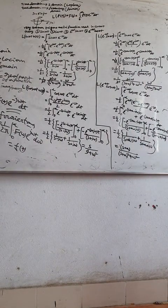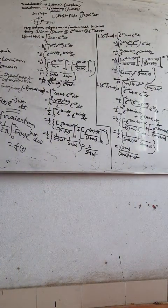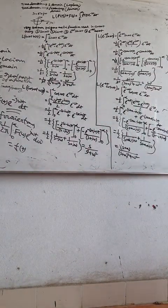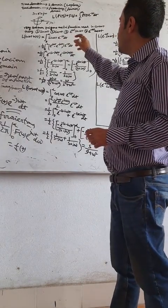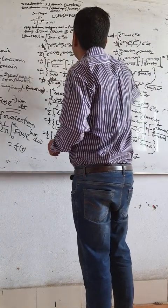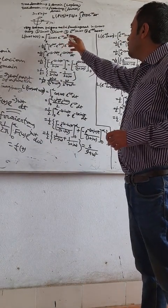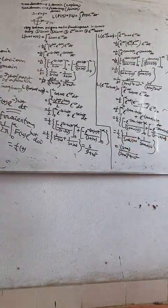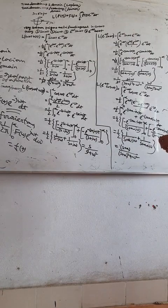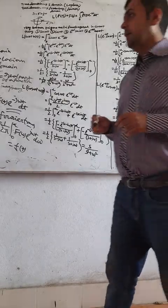Whenever you are doing work in circuit theory, you use certain functions. The very common trigonometric functions used in circuit theory are: sine of omega t, cosine of omega t, e to the power minus at times sine of omega t, and e to the power minus at times cosine of omega t. These four functions are used rapidly in circuit theory, and today we will learn their Laplace transformations.